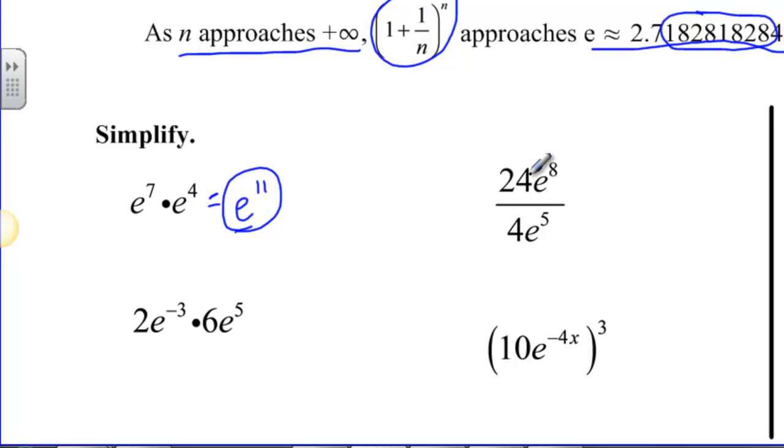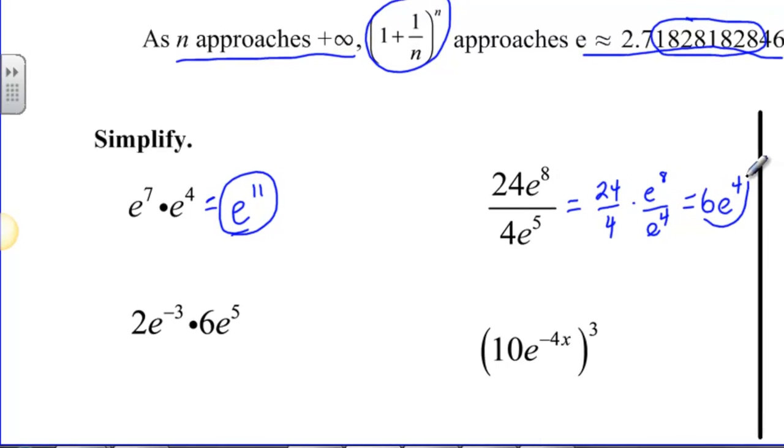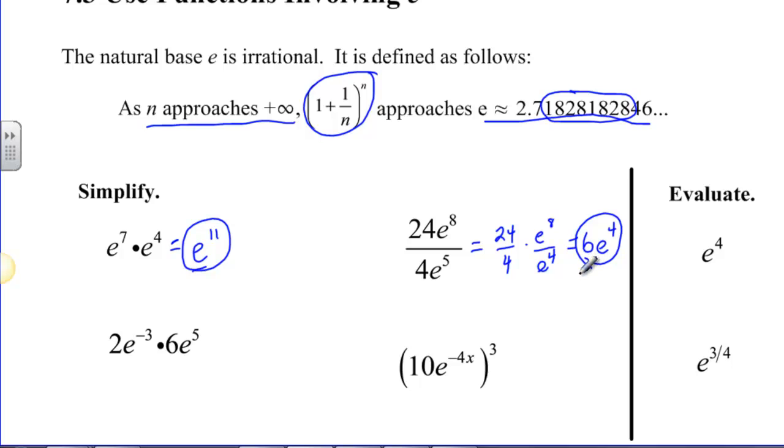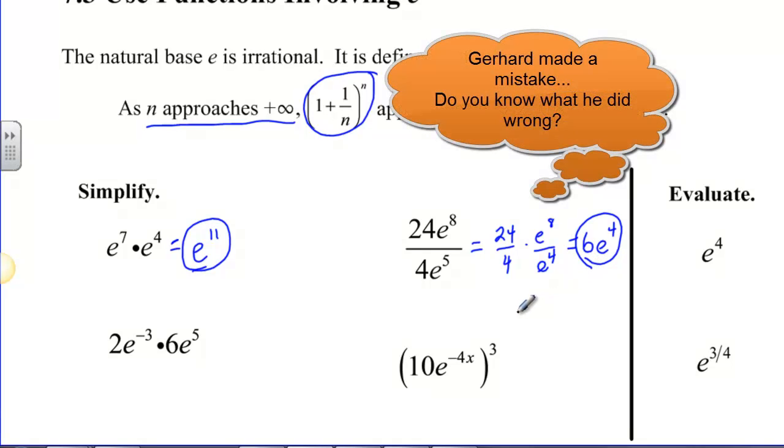Same thing over here. I see 24e to the eighth over 4e to the fifth. And if we're like Spencer, we're going to say split it up. So we're going to say 24 over 4 and e to the eighth over e to the fifth. Now, let's do 24 divided by 4, that's easy, that's 6. And then e to the eighth over e to the fourth, we subtract our exponents and we just get e to the fourth. So 24e to the eighth over 4e to the fifth just becomes 6e to the fourth.